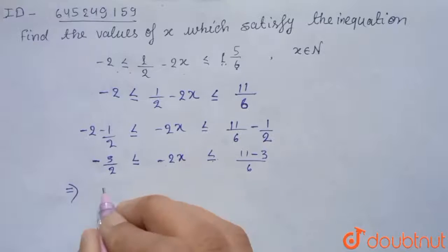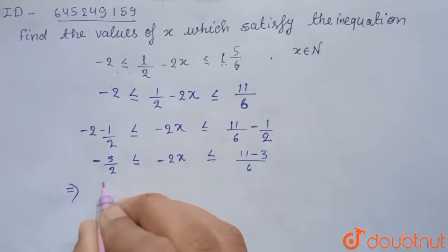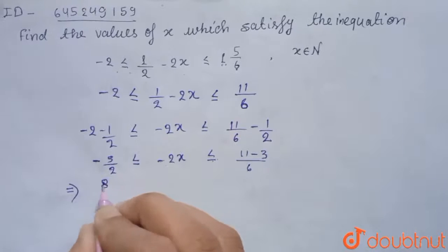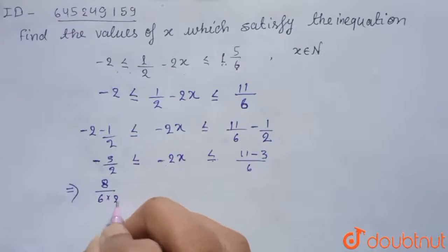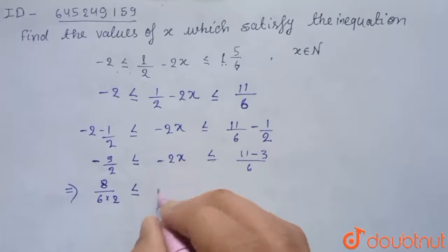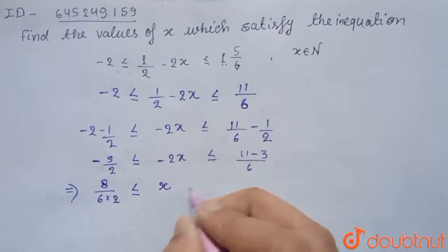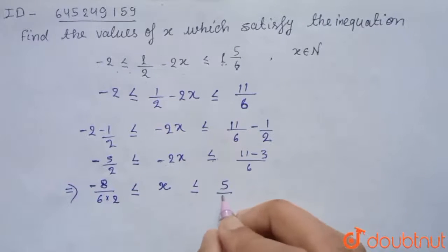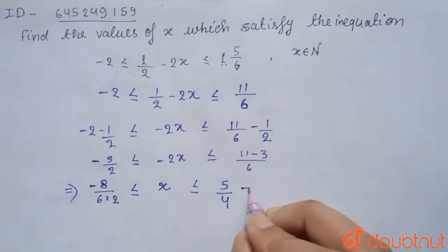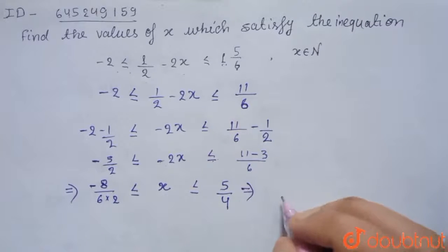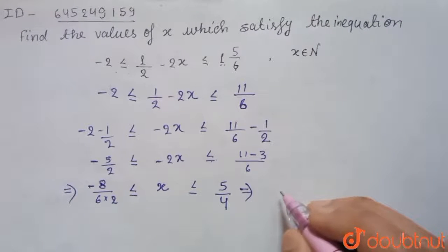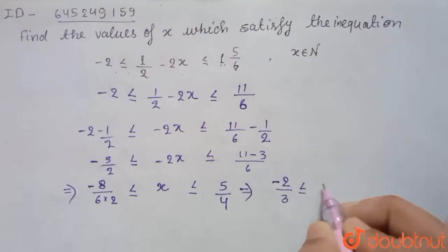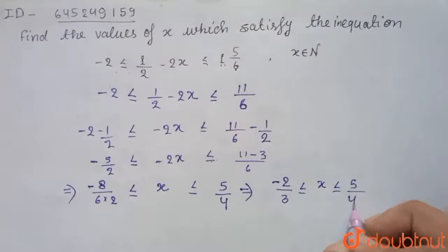So now divide this equation by -2. As we are dividing with minus, so this sign will be changed. So here we get this will become 8 upon 6 into 2 less than equal to x less than equal to 5/4.